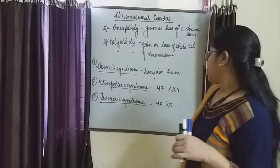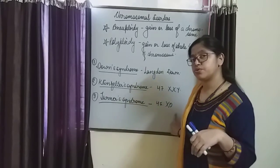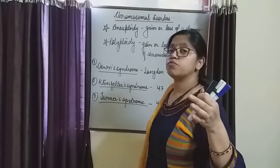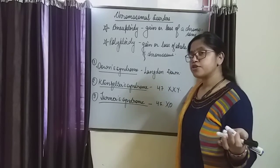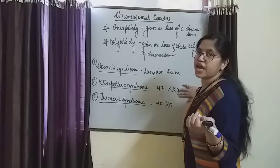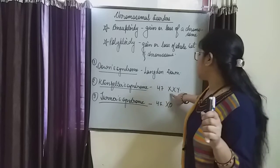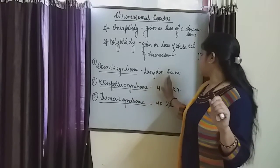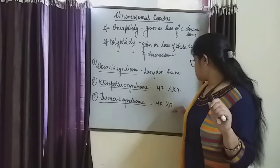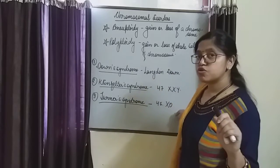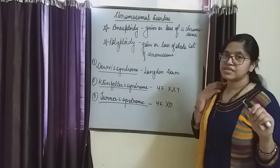In Turner syndrome, one X chromosome is deleted. The chromosome number becomes 45 instead of the normal 46, because one X chromosome is removed. Therefore, in females it shows abnormality — the X chromosome is deleted, the chromosome number becomes 45, and this shows abnormality in the reproductive organs.